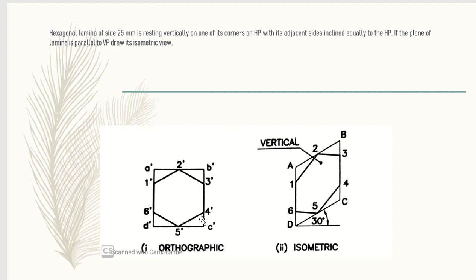The plane of the lamina is parallel to VP — draw its isometric view. First, draw the hexagonal lamina such that it is resting on one corner and the two adjacent sides are equally inclined. This is a front view. After drawing this, you have to enclose this hexagon with a rectangle such that it passes through all the corners.